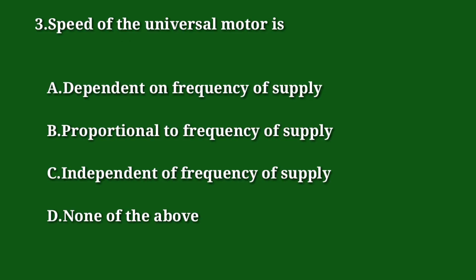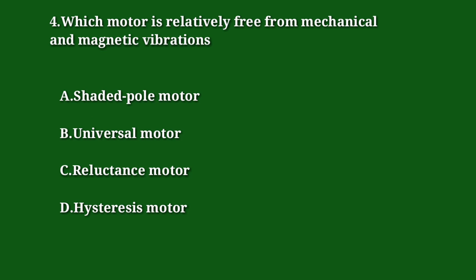Question 3: The speed of a universal motor is — A) dependent on frequency of supply, B) proportional to frequency of supply, C) independent of frequency of supply, D) none of the above. The answer is A — dependent on frequency of supply. Question 4: Which motor is relatively free from mechanical and magnetic vibrations? A) Shaded pole motor, B) Universal motor, C) Reluctance motor, D) Hysteresis motor. Since the universal motor has more mechanical vibrations, the answer is D — hysteresis motor.